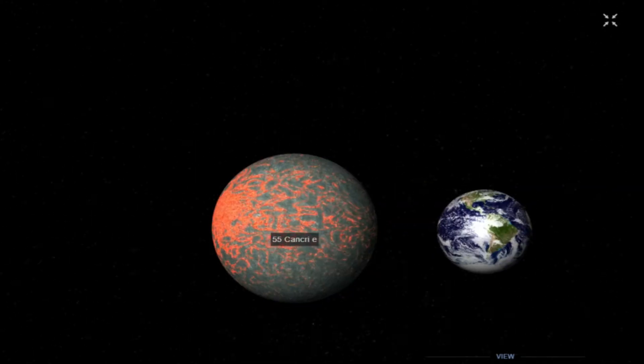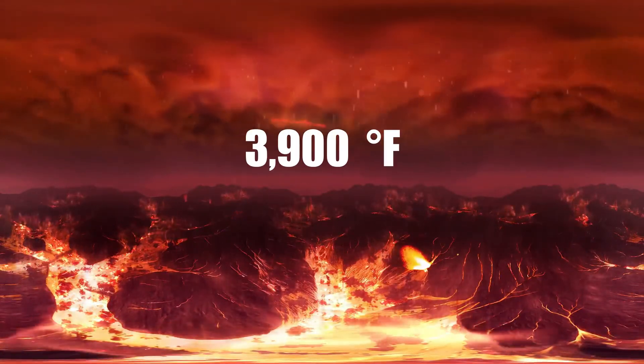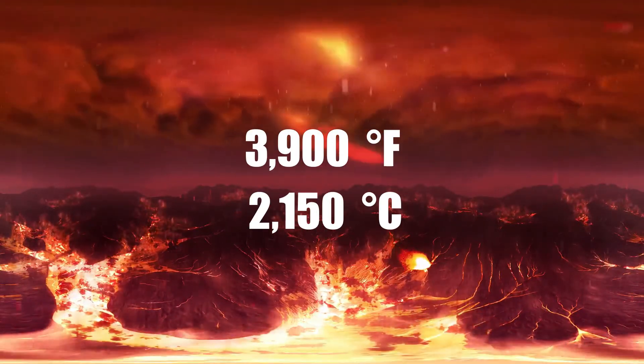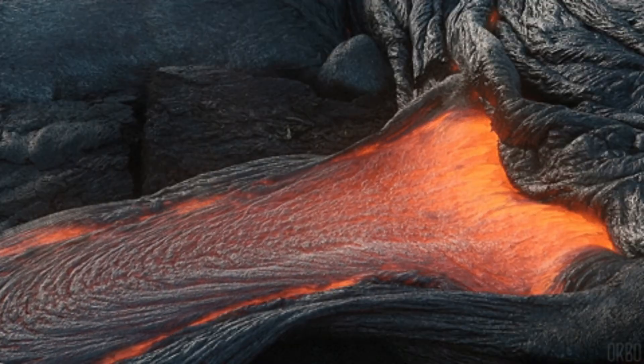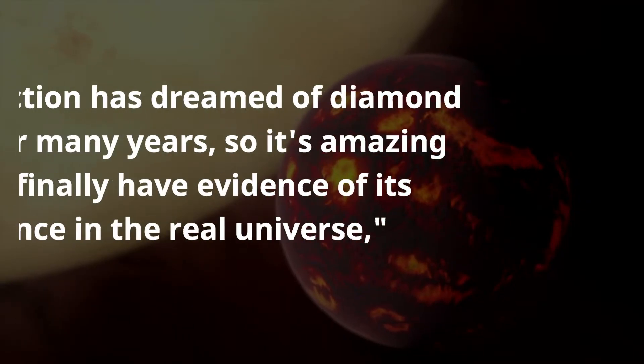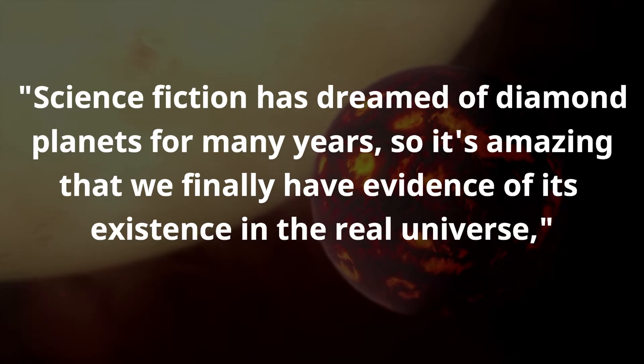It is classified as a super-Earth. Its surface temperatures reach 3,900 degrees Fahrenheit, 2,150 degrees Celsius, which along with carbon makes perfect conditions for creating diamonds. Researchers at Yale University said science fiction has dreamed of diamond planets for many years, so it's amazing that we finally have evidence of its existence in the real universe.